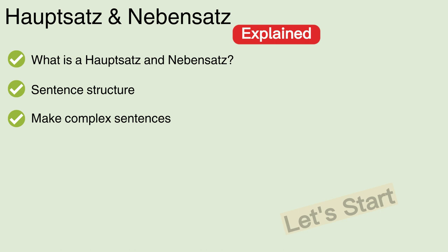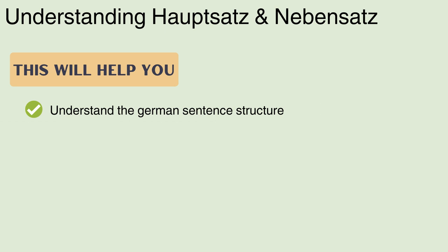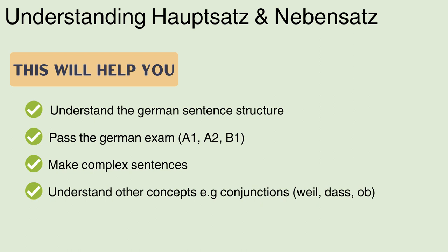Hauptsatz and Nebensatz are the basic concepts of German language. Learning these concepts will help you understand the German sentence structure, pass the German language exams, create complex sentences, and understand other concepts, for example conjunctions.